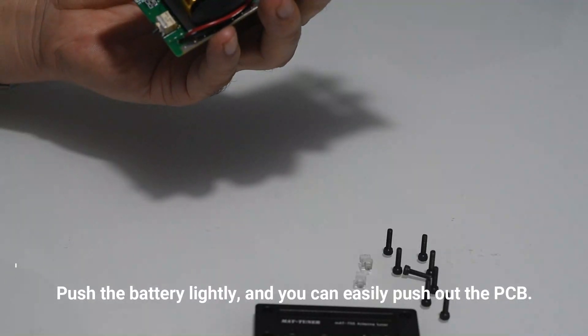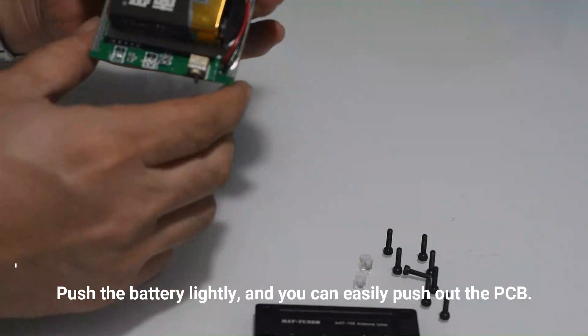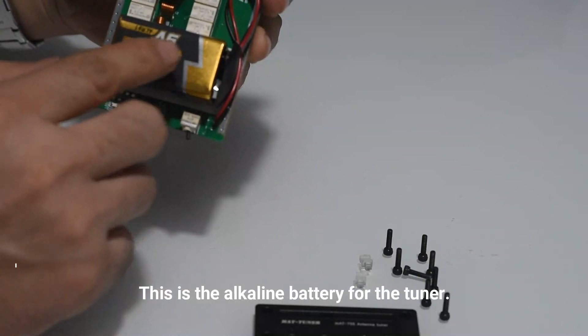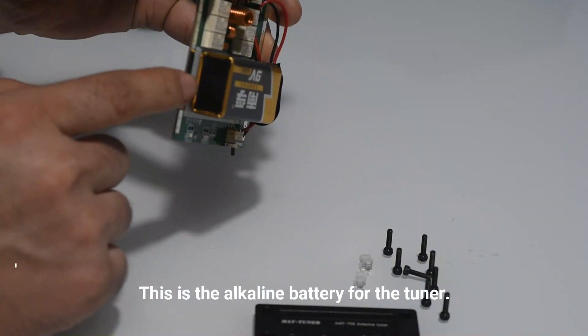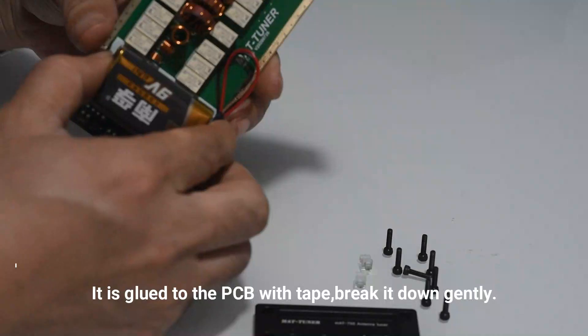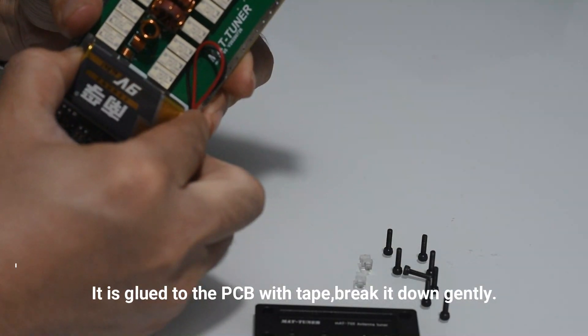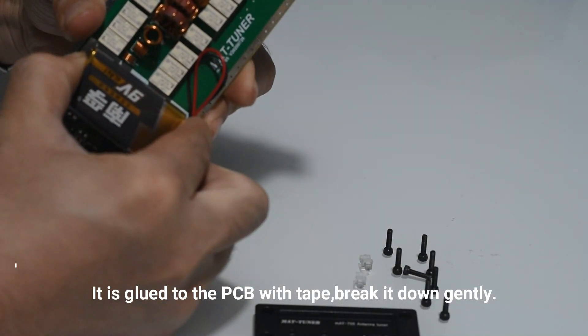Take the board away from the enclosure, leaving the battery exposed. The battery is actually glued to the board. Very gently peel the battery away from the PCB itself.